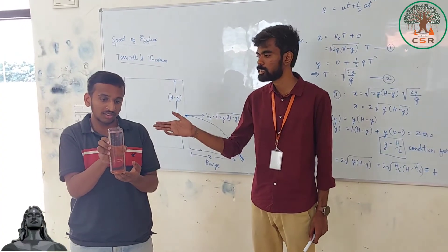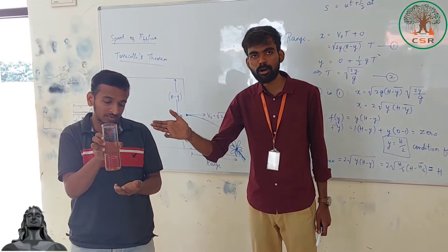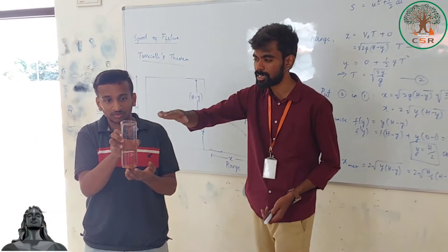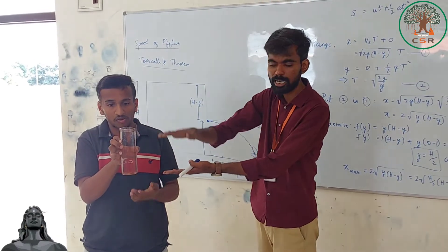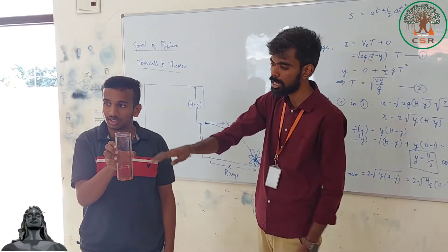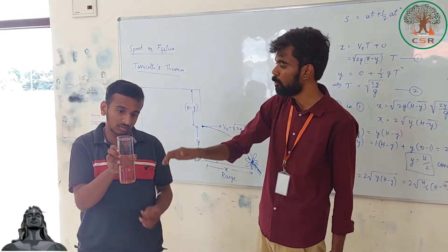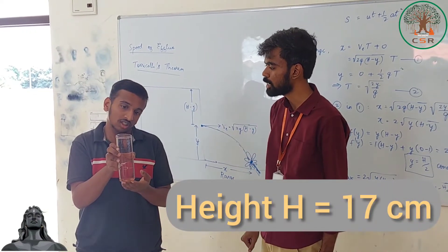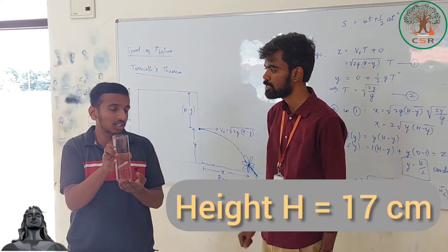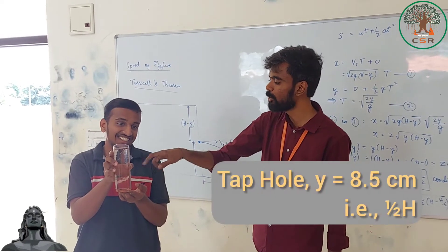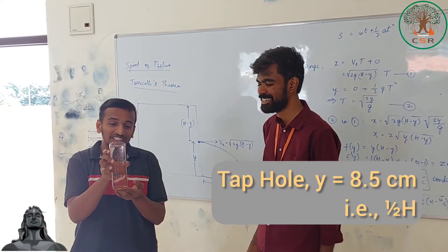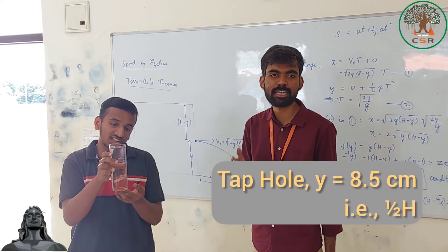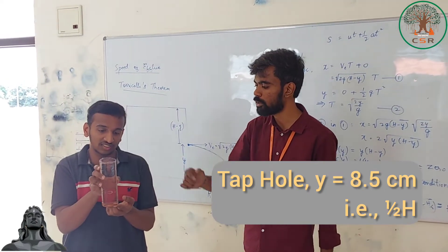Now we will do experimental verification. My student Jain has prepared a bottle by cutting the top of a plastic water bottle to make a cylindrical tank and filled it with water to the top. The height of the cylindrical bottle is 70 cm. The hole has been marked at 35 cm, which is half of 70 cm — the mid-height.